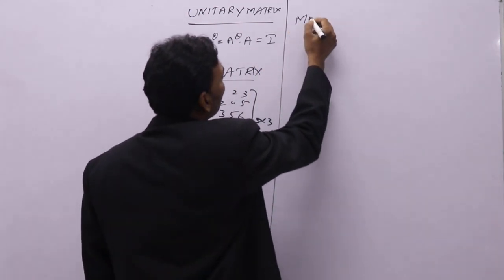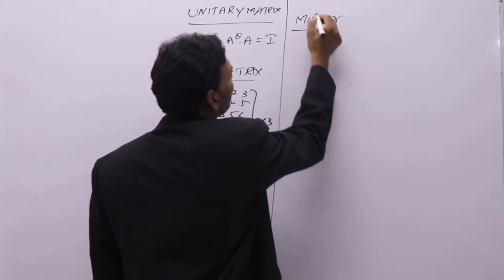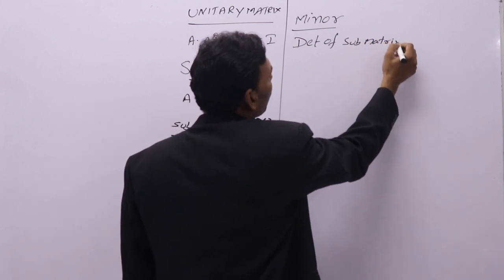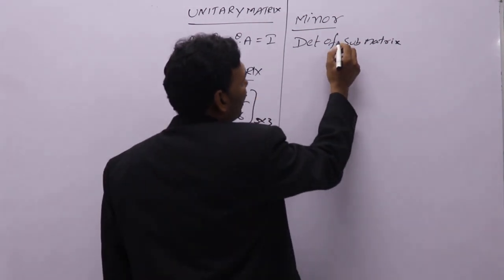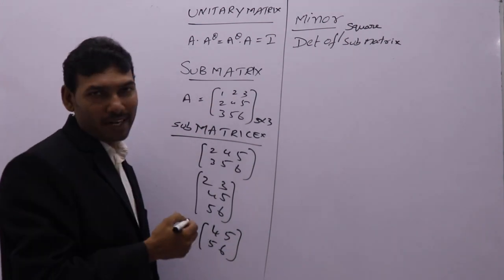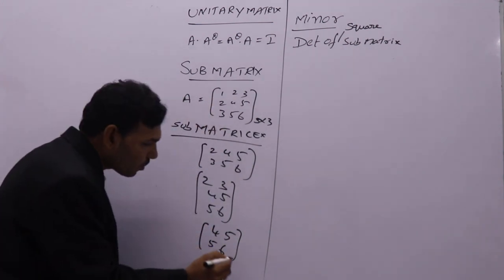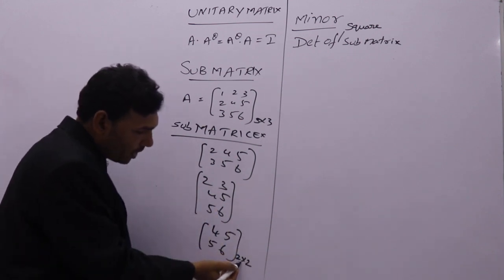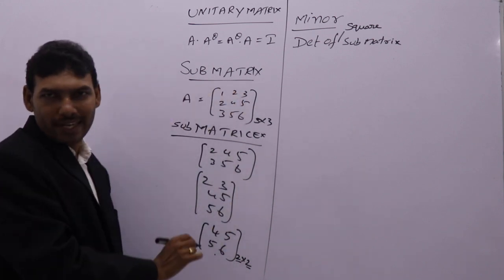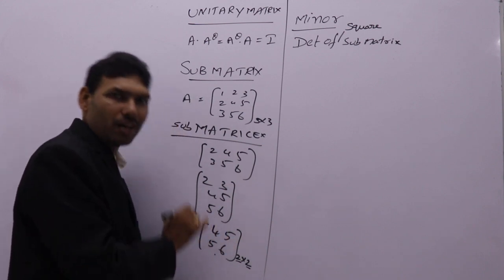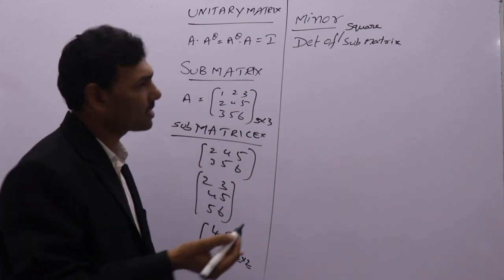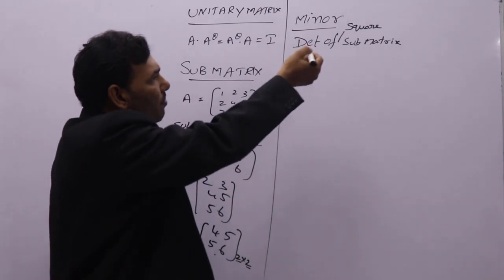The determinant of a sub-matrix is called a minor. Minor means the determinant of a sub-matrix. You all know how to find the determinant of a 2 by 2 matrix. Here especially we will take a square sub-matrix. To get a square sub-matrix from the actual matrix, you have to delete one row and one column, because we are going to use square sub-matrices for further applications.